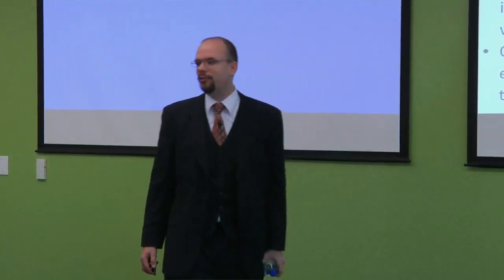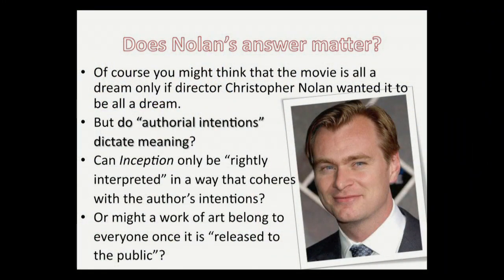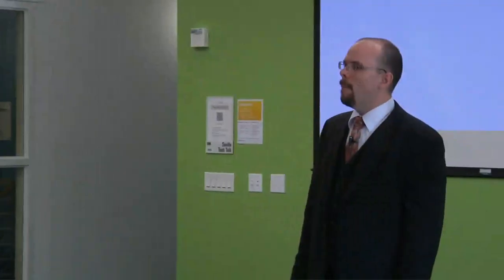You might wonder, we could solve all this if we just ask Nolan himself, is the whole movie a dream or not? And Nolan's even said that he does have a view. But does that matter? Does Nolan get to dictate how this film must be interpreted? Or if he makes it ambiguous, is it open to us? If he wanted it to be interpreted a certain way, he had to put in there something to make it be interpreted that way. And if he doesn't do that, if he intentionally makes it ambiguous, then my interpretation is just as valid as his. Is that the way art works? Or does authorial intention matter? That's what the first chapter of my book is about.